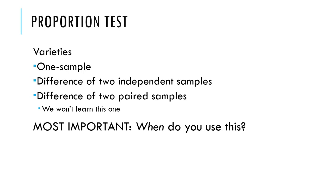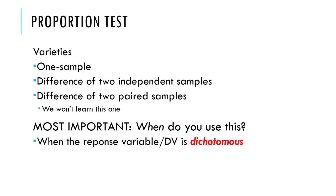Most importantly in this entire unit is understanding when to do this — everything else is just plugging in values. The part that's hard is understanding what the data look like that would lead us to do this kind of test. We do this when the response variable or the dependent variable is dichotomous, sometimes known as binary, which just means there are only two possible values — male/female, yes/no, that kind of thing.